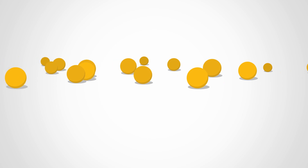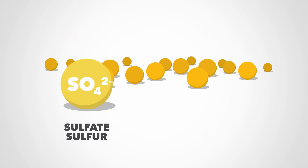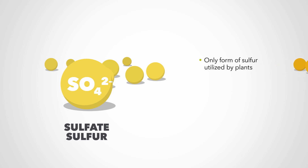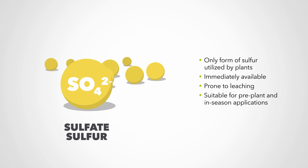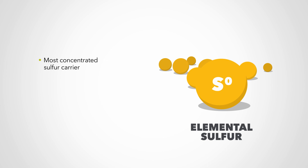There are many sulfur fertilizer options on the market today, but the majority fall into one of two categories: sulfate sulfur and elemental sulfur. Sulfate sulfur is the only form of sulfur that plants can utilize, but because it is immediately available to plants, it is also prone to loss through leaching. Sulfate sulfur fertilizers are more suited for pre-plant and in-season applications since the form is readily plant available.